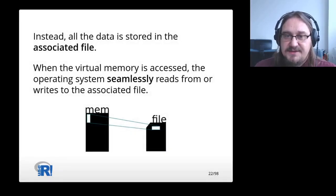A memory mapped file is associated with an area of virtual memory. Virtual memory is a construct of the operating system. It does not contain any data inside, so it does not use up actual memory. Instead, all the data is stored in the associated file. When the virtual memory is accessed, the operating system seamlessly reads from or writes to the associated file.